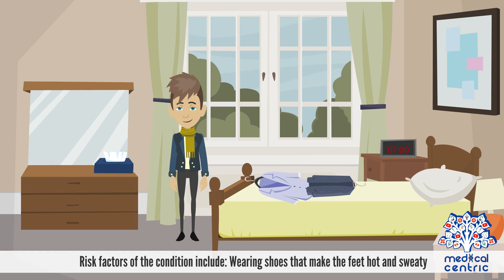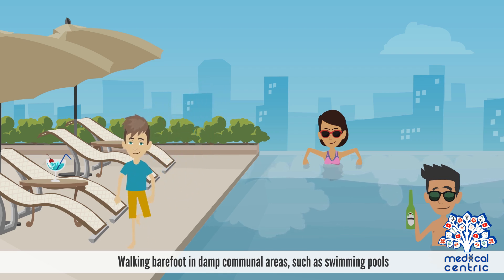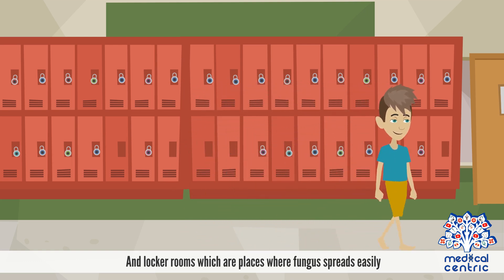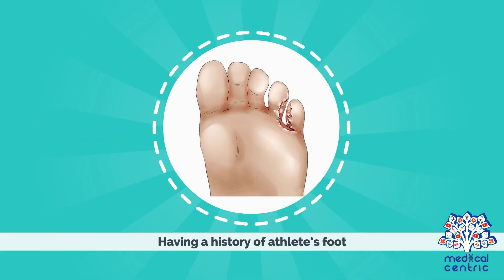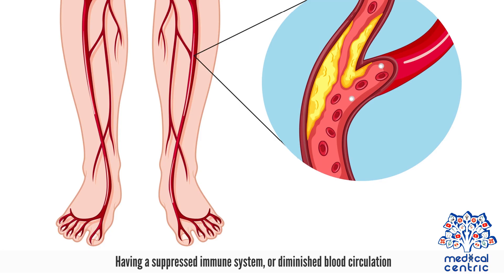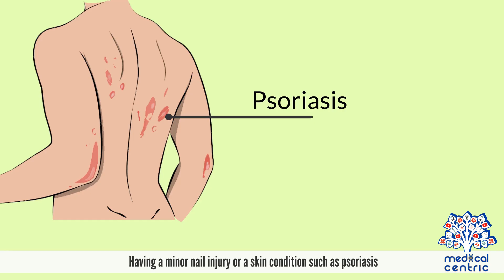Risk factors of the condition include: wearing shoes that make the feet hot and sweaty; walking barefoot in damp communal areas such as swimming pools, gym showers, and locker rooms, which are places where fungus spreads easily; having a history of athlete's foot; being older; having a suppressed immune system or diminished blood circulation; heavy perspiration; and having a minor nail injury or a skin condition such as psoriasis.